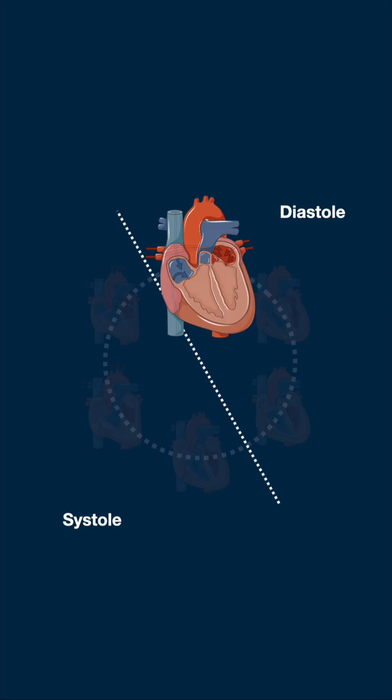As pressures in the aorta and pulmonary artery rise above ventricular pressure, the semilunar valves close, generating the second heart sound, dub.